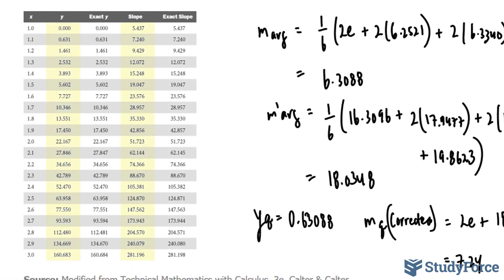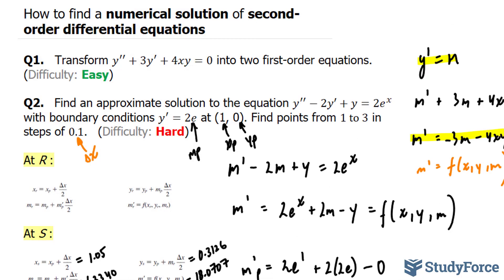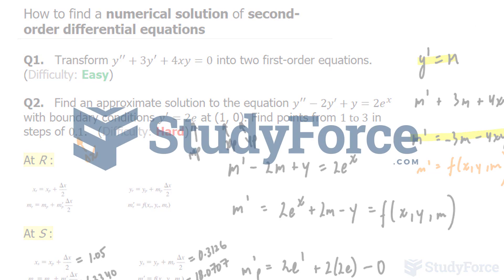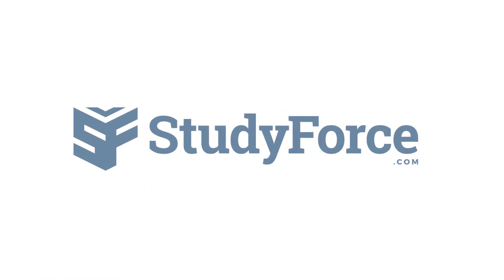The computation is then repeated, and the remaining values are given in the table that you see to your left. The exact y values are shown as well, just for comparison's sake. You can see how close this method is to coming up with the actual answers. And so there you have it. That is how to find a numerical solution of second-order differential equations. Thank you.